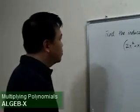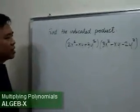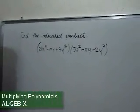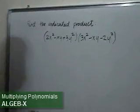Here, we are asked to find the product of 2x² - xy + 3y² and 3x² - xy - 2y².